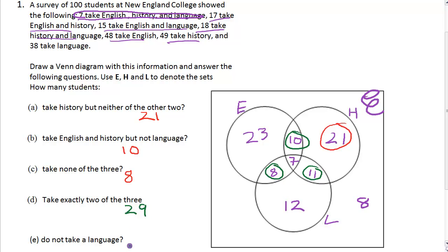And then, do not take Language. The easiest way to work out those that do not take Language is 100 minus 38, which is 62.